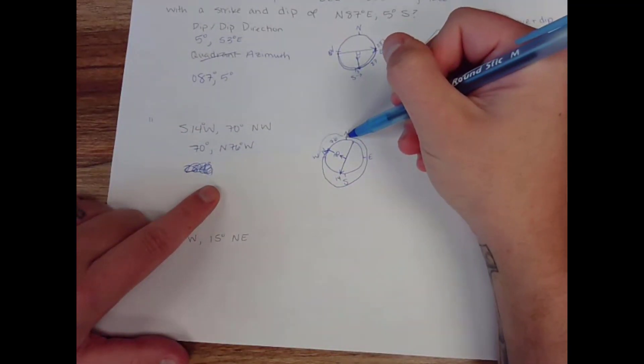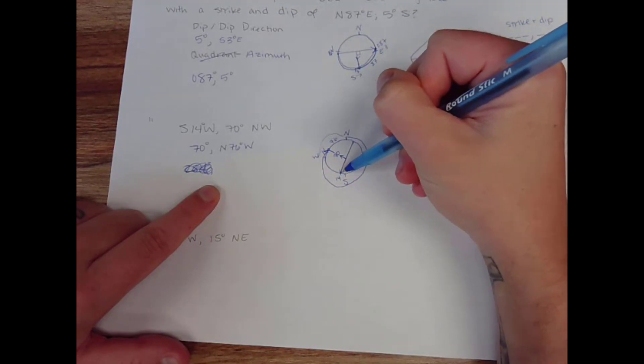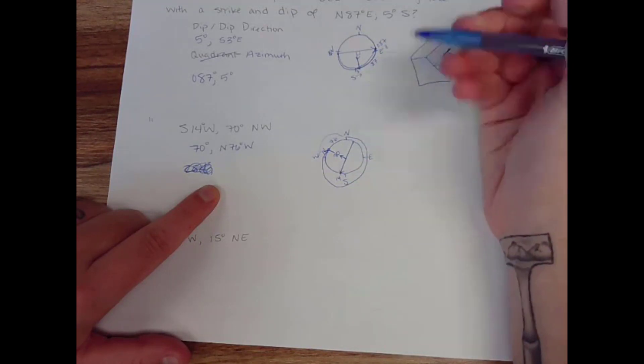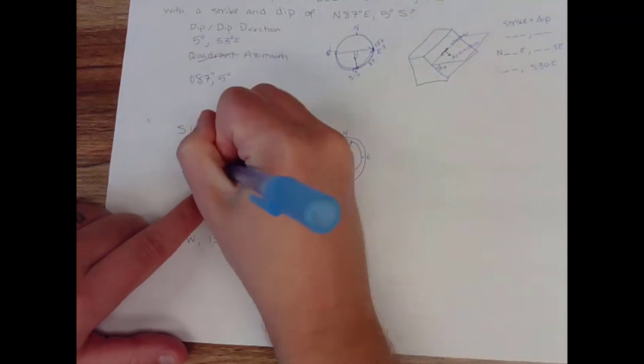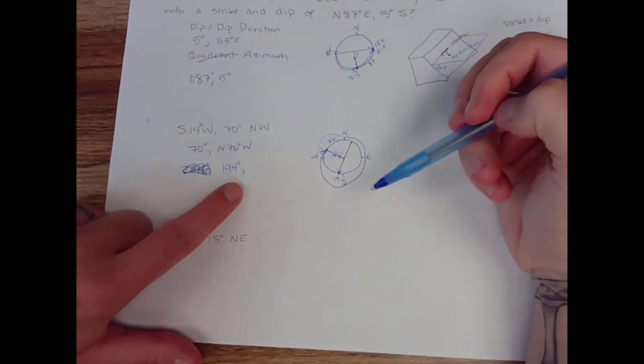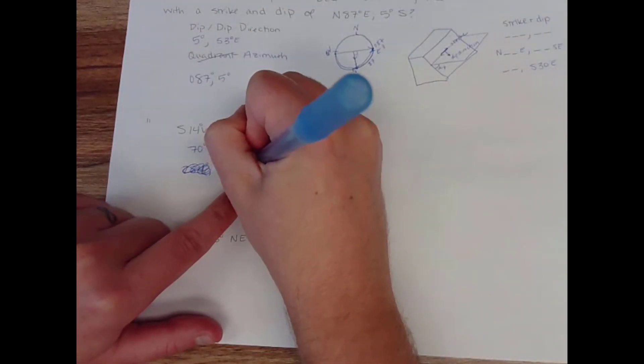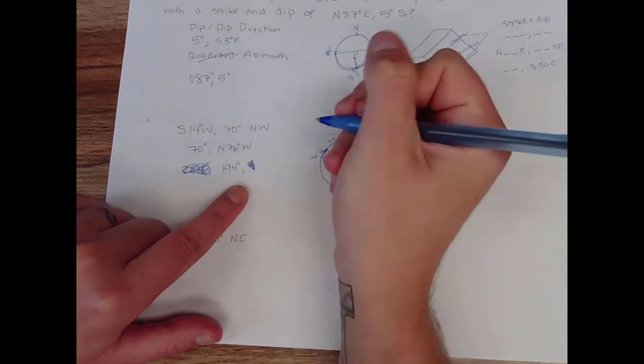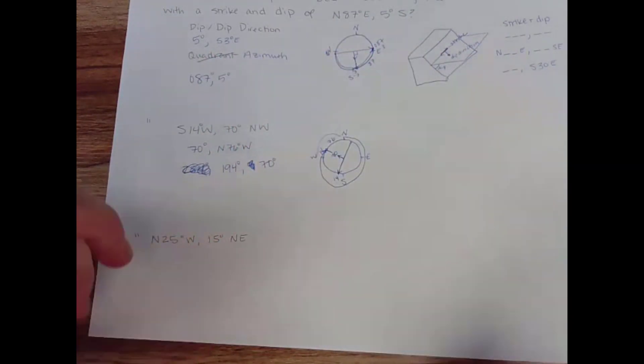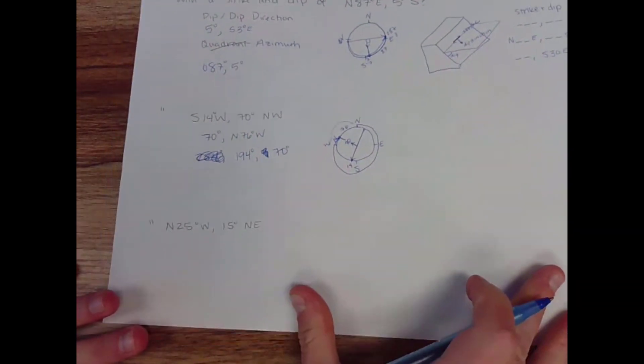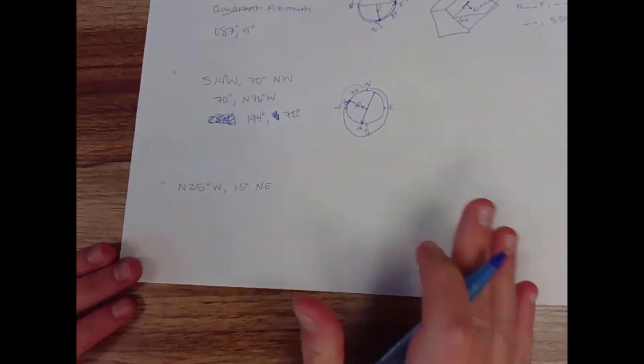We go 90, 180, and 180 plus 14. So 194. Experience to make a mistake. And then your dip and dip direction. 70 degrees. And you could write 70 degrees northwest if you wanted to. All right. One more example.